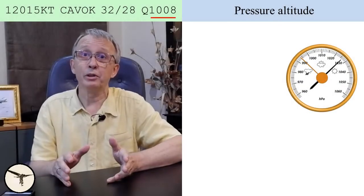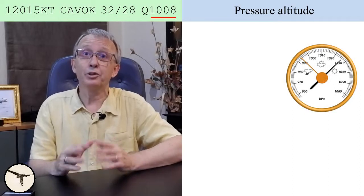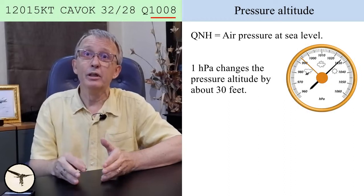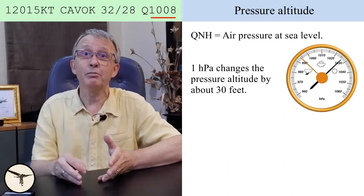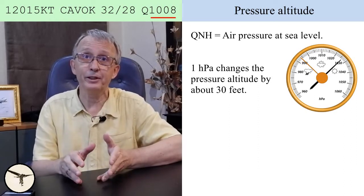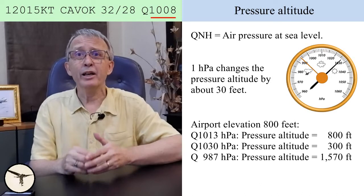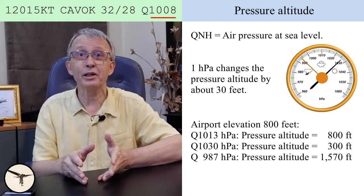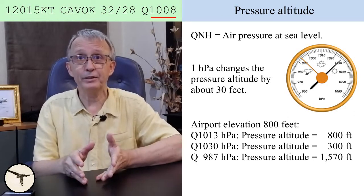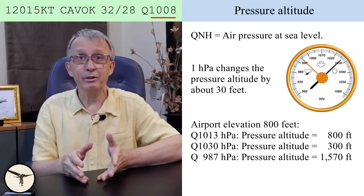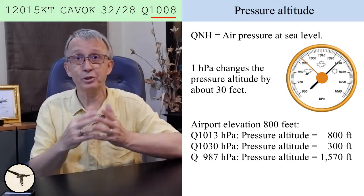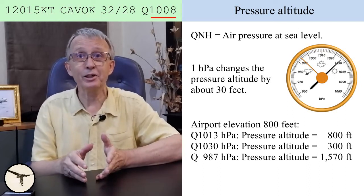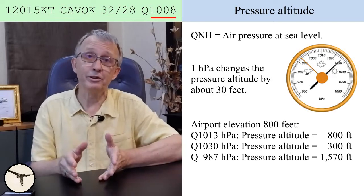The air pressure at sea level is 1,008 hectopascal. It's called QNH and is used to calculate the pressure altitude of the airport. A change in air pressure of 1 hectopascal changes the pressure altitude by about 30 feet. For example: an airport with an elevation of 800 feet — when QNH is 1,013 hPa, pressure altitude is 800 feet; when QNH is 1,030 hPa, pressure altitude is 300 feet; when QNH is 987 hPa, pressure altitude is 1,570 feet.